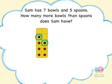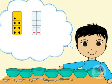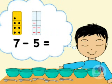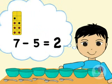So there are two more bowls than spoons. With this model, children see that they can take away one bowl for each spoon. Seven bowls in all, take away five bowls with spoons, leaves two bowls.